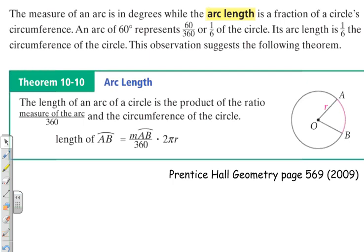The measure of an arc is in degrees, while the arc length is a fraction of the circle's circumference. So the measure of an arc, or the arc length, is measured in whatever the measure of the circle is in. An arc of 60 degrees represents 60 out of 360 degrees, or one-sixth of the circle. Its arc length is one-sixth the circumference of the circle. This suggests the following theorem, which is the arc length theorem.